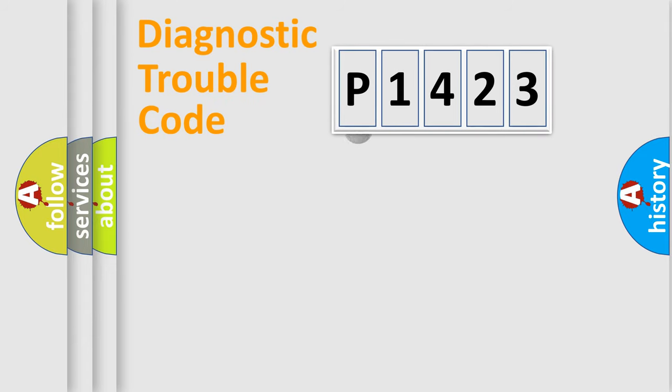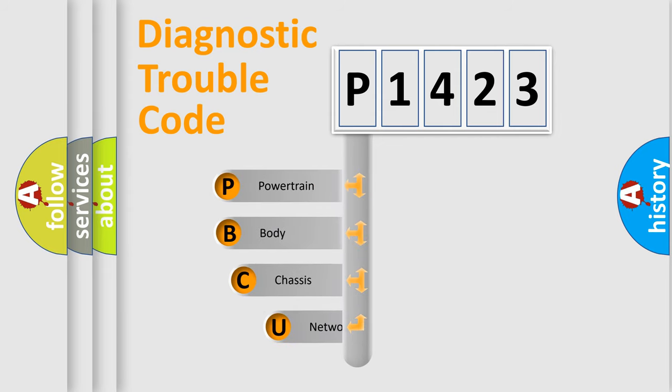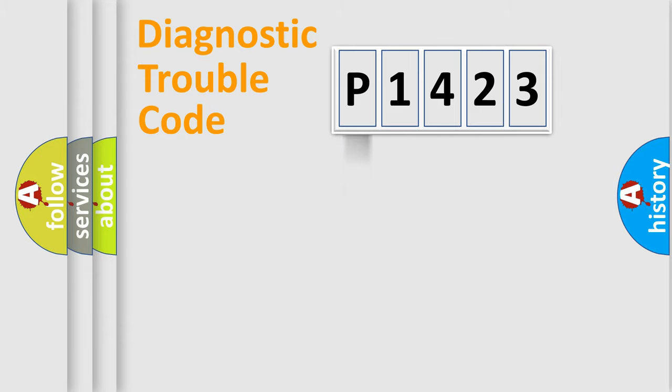First, let's look at the history of diagnostic fault code composition according to the OBD2 protocol. We divide the electric system of automobile into four basic units: powertrain, body, chassis, and network.